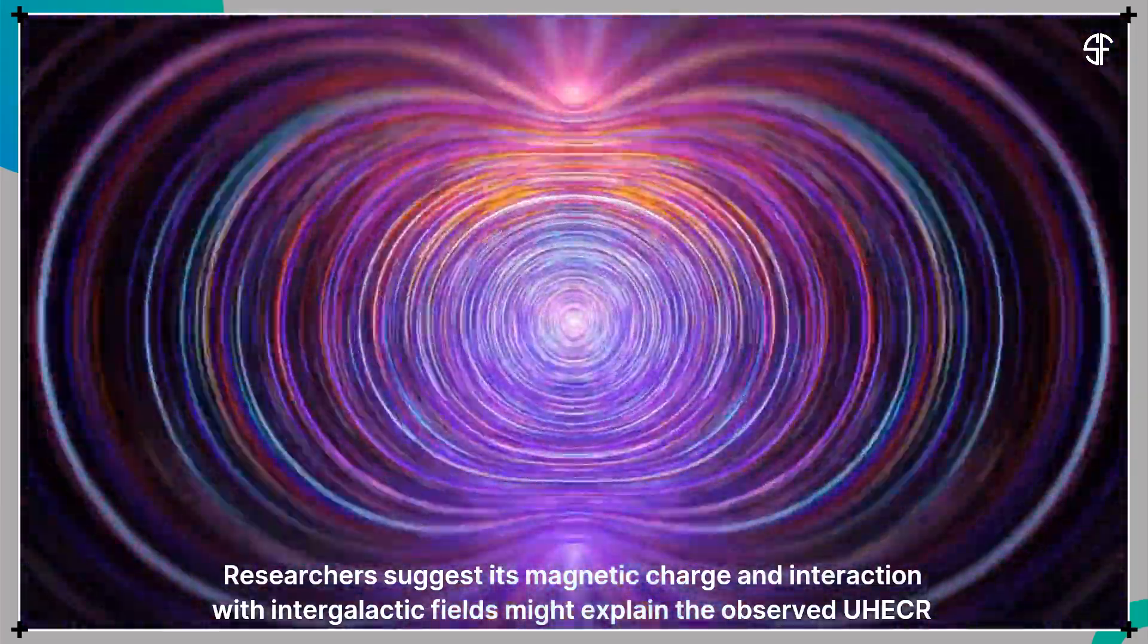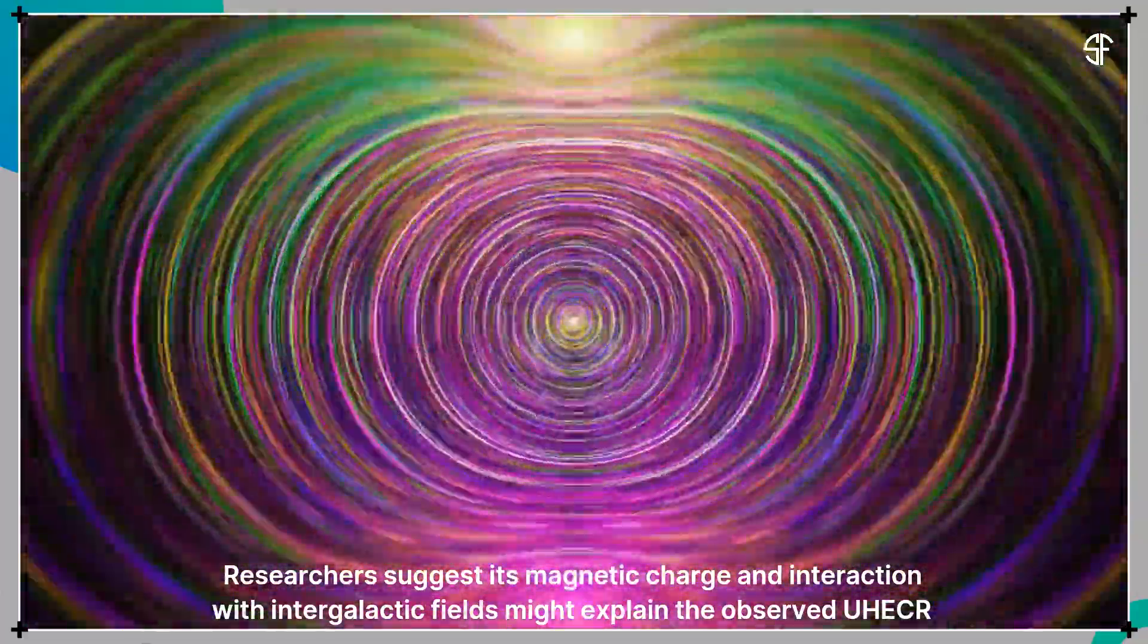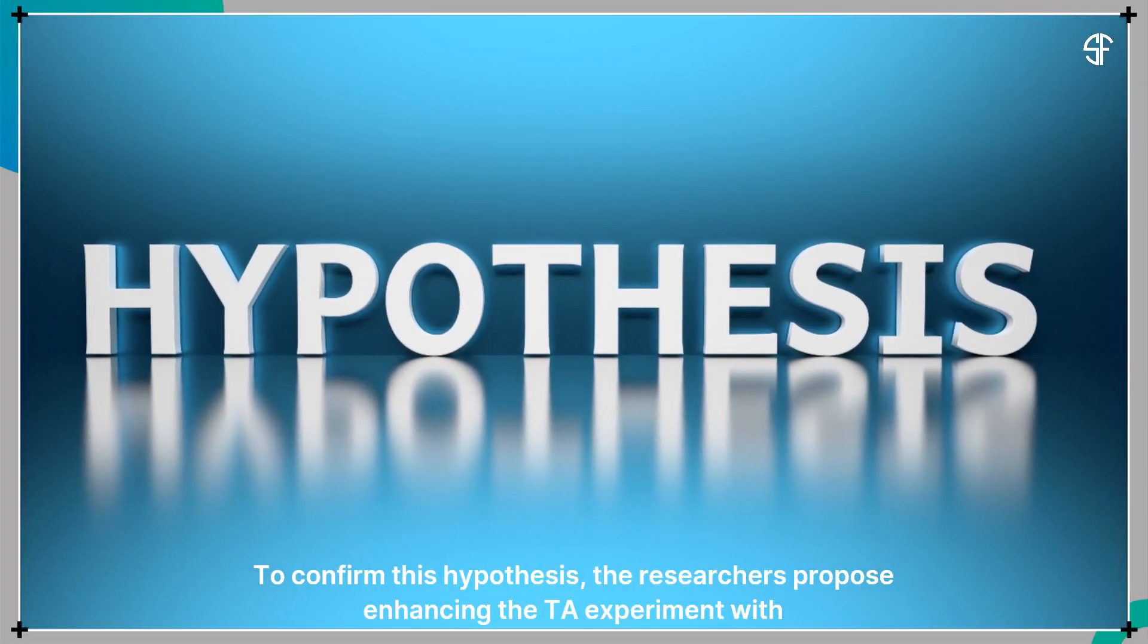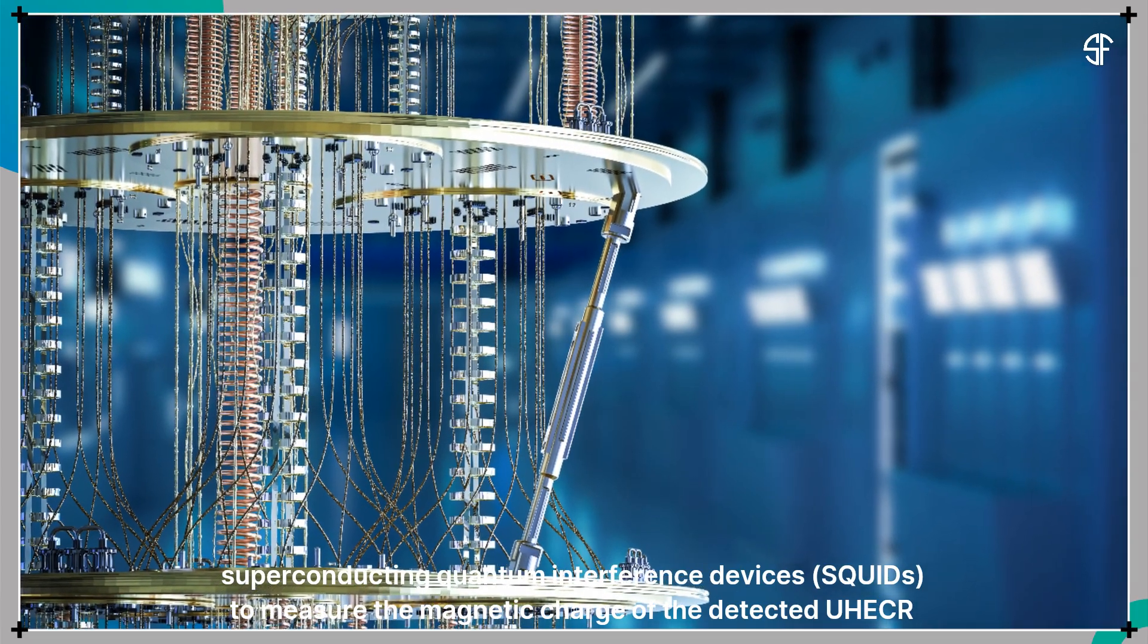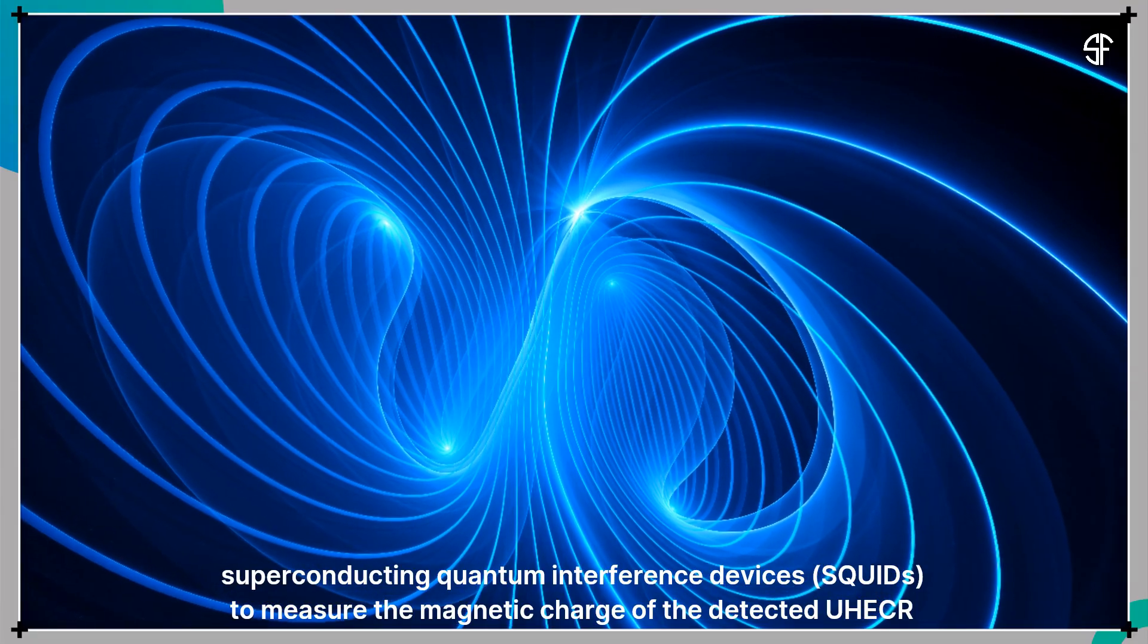Researchers suggest its magnetic charge and interaction with intergalactic fields might explain the observed ultra-high-energy cosmic ray energies. To confirm this hypothesis, the researchers propose enhancing the TA experiment with superconducting quantum interference devices to measure the magnetic charge of the detected UHECR particles.